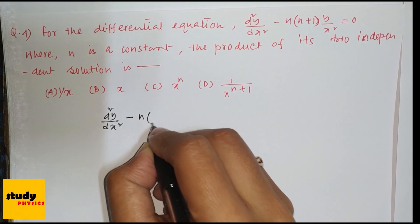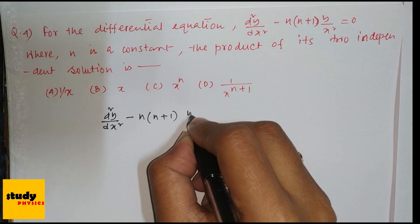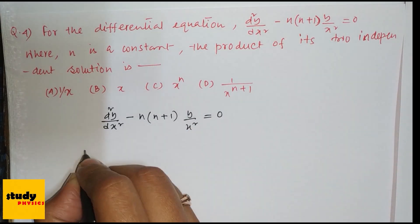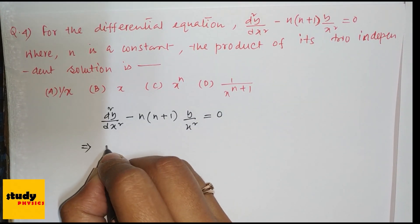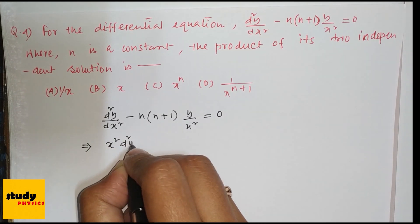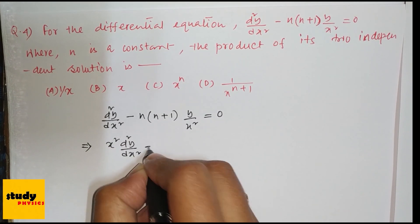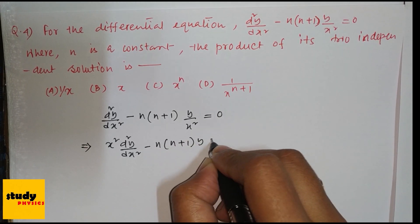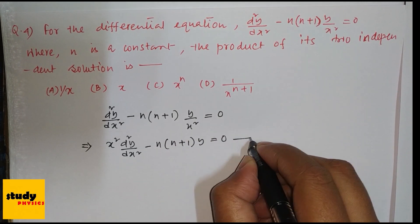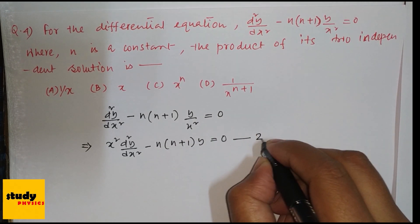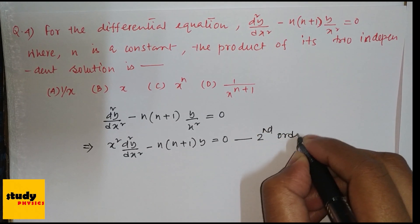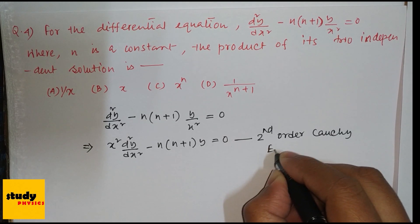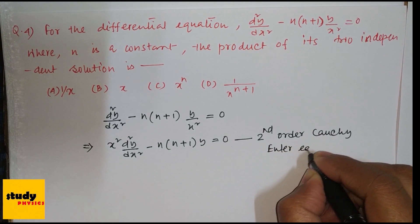First, write the equation: d²y/dx² minus n(n+1)y/x² = 0. Multiplying through by x² gives: x² d²y/dx² minus n(n+1)y = 0. This is a second-order Cauchy-Euler equation.